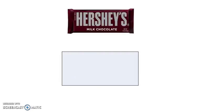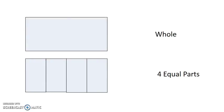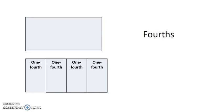Next, let's partition the candy bar or rectangle into four equal parts. How many equal parts make a whole? Four equal parts make one whole object. We name the parts fourths.